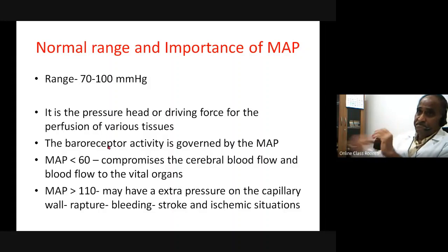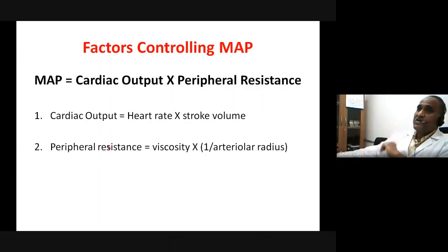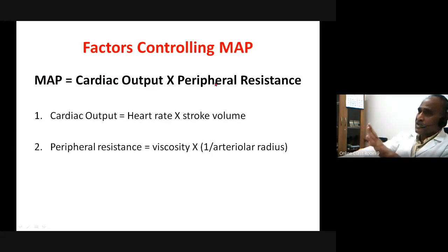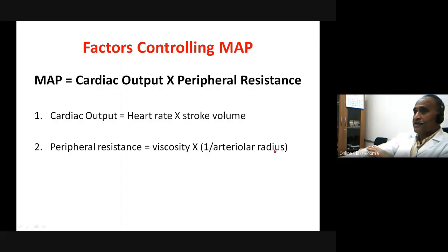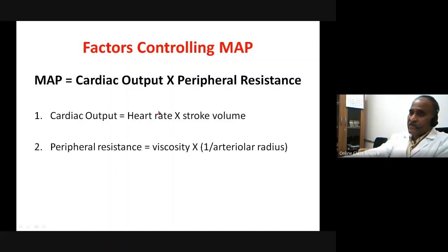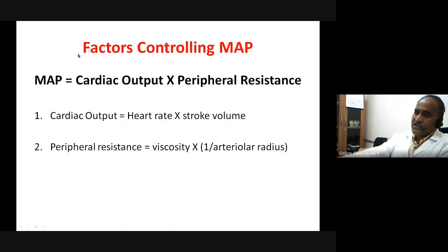The factors controlling MAP: MAP equals cardiac output times peripheral resistance. Cardiac output is heart rate times stroke volume. Peripheral resistance is determined by viscosity and the reciprocal of arterial radius. Whatever factors alter heart rate or stroke volume will alter MAP; whatever factors change viscosity or arterial radius will change peripheral resistance and thus MAP.